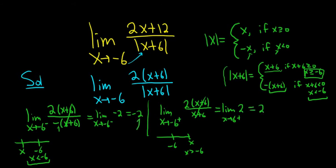So when you take the limit from the left, you get negative 2. When you take the limit from the right, you get 2. So therefore, the limit does not exist. So the answer in this case is DNE. I hope that made sense.